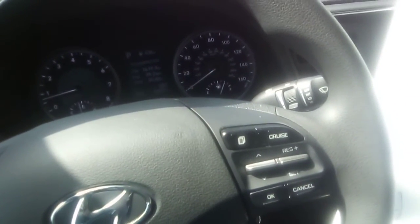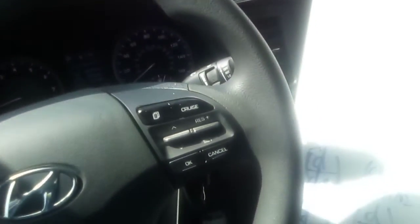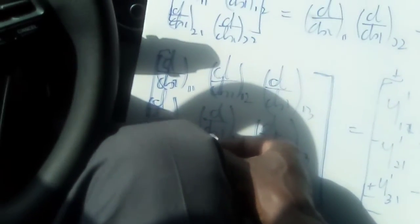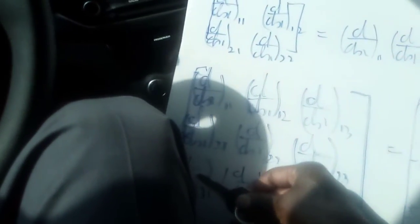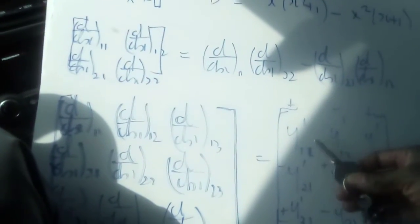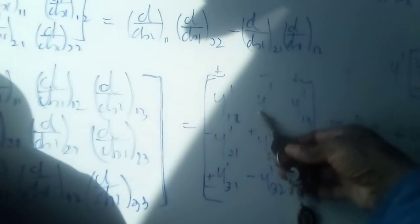We have d by dx one-one, d by dx one-two, d by dx one-three, d by dx two-one, d by dx two-two, and d by dx two-three, d by dx three-one, d by dx three-two, and d by dx three-three. This is the same as saying y prime one-one, y prime one-two, y prime one-three.